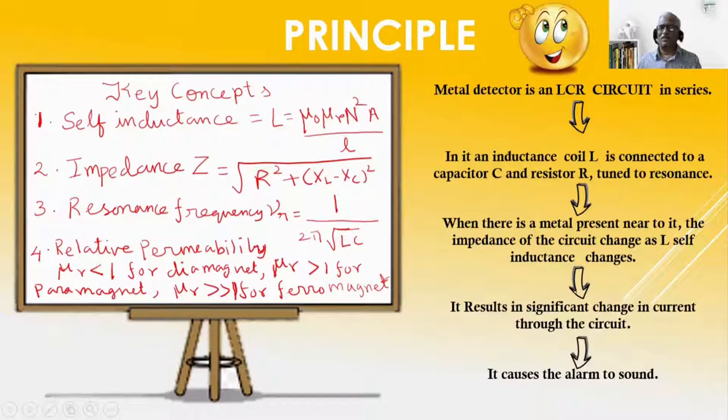It means when no metal is passed through the metal detector or brought near the metal detector, the circuit is at resonance. At resonance, impedance in the circuit is minimum. Current in the circuit is maximum. When current in the circuit is maximum, alarm is turned to off position.